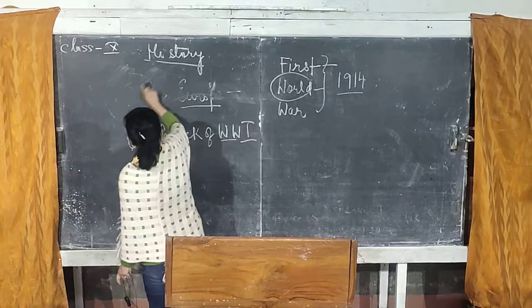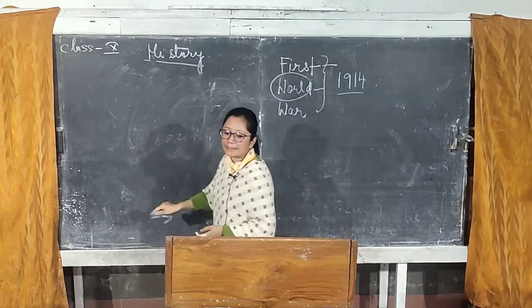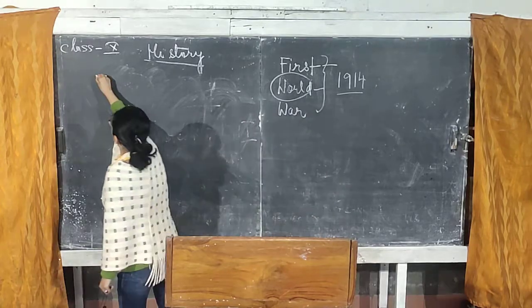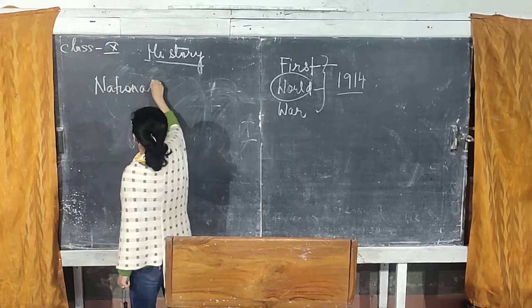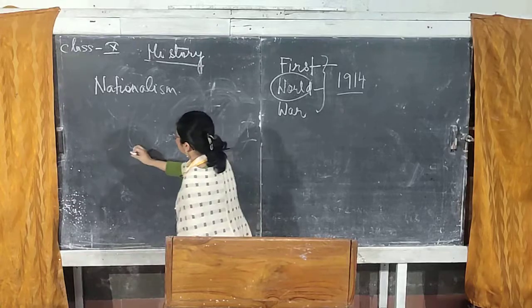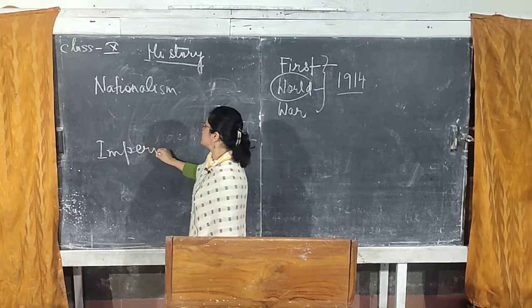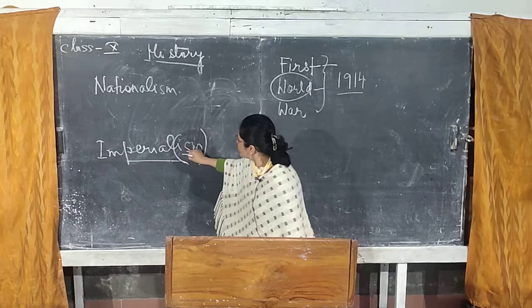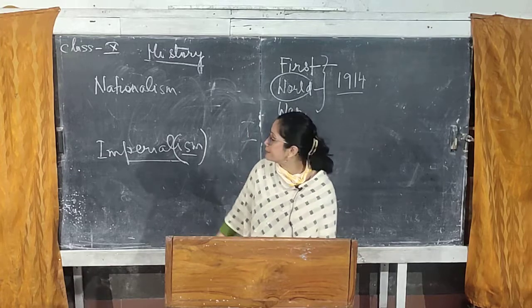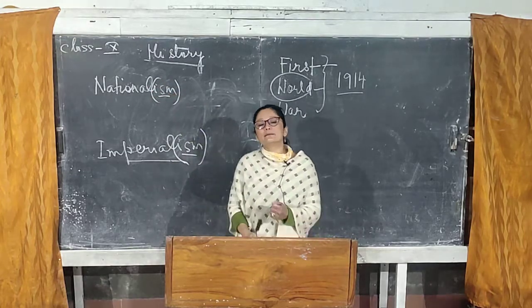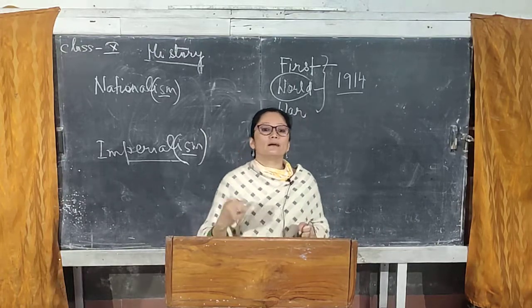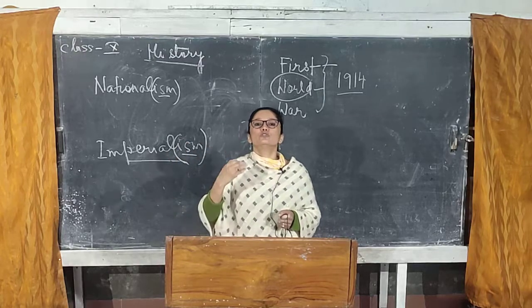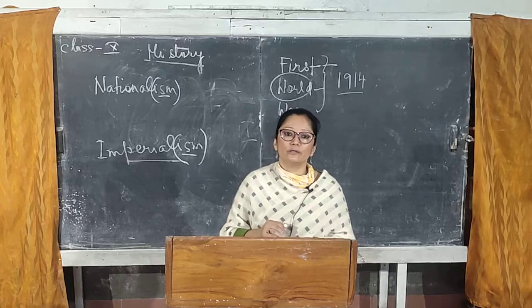The first cause we are discussing — if you look in your textbook — involves two terms you have to understand very properly. The first term is nationalism, and the second term is imperialism. Notice the use of the suffix '-ism', meaning a theory, a principle, a doctrine, a thought. So here we will be discussing two types of theories, two types of thoughts, which gave rise to the First World War.